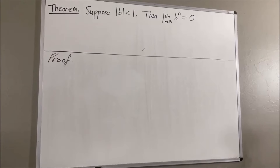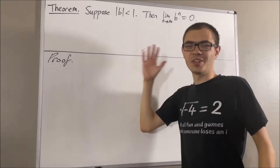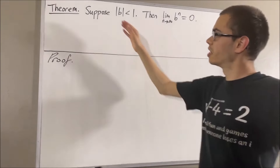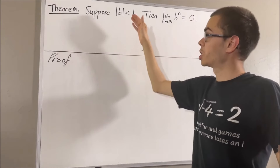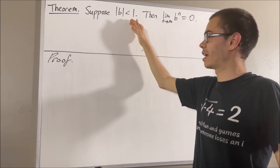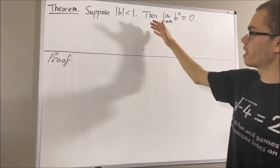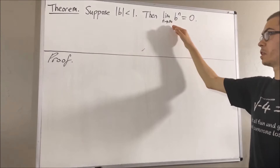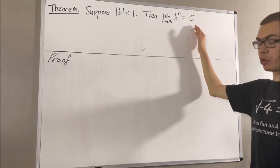Hello! In this video, we are going to prove the following theorem. Suppose b is a real number such that the absolute value of b is less than 1. Then the limit as n approaches infinity of b to the power of n is equal to 0.